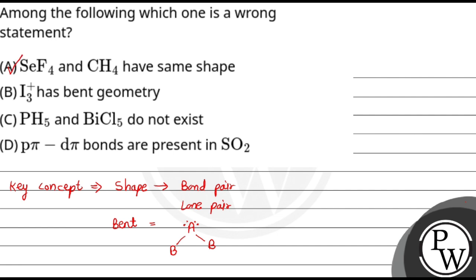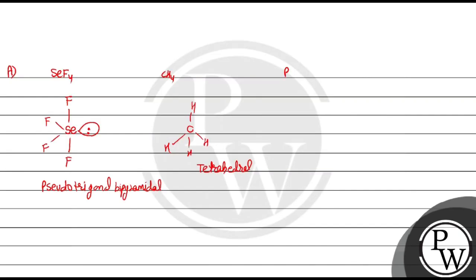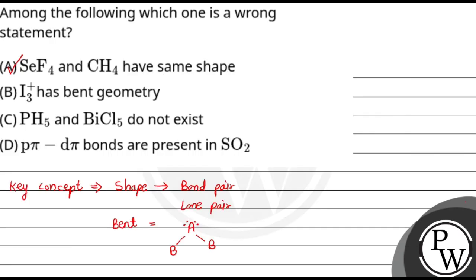Let's see option B: I3+ has bent geometry. I3+ structure is iodine with positive charge. This geometry is V shape, which means option B is correct.